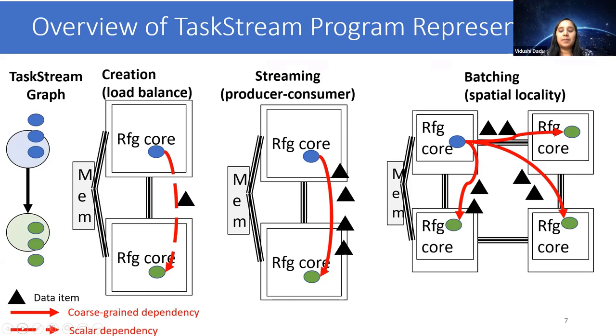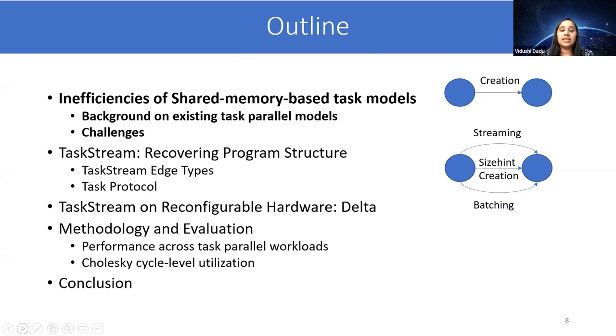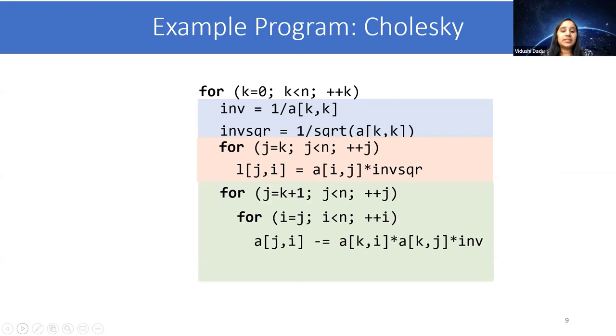In this talk, I will first discuss the inefficiencies of shared memory-based task models, and then describe our solution TaskStream, which is a novel program representation to exploit the lost program structure. Then we discuss how TaskStream is implemented on reconfigurable hardware, and then I will go over the evaluation and conclude. I will use Cholesky as a driving example during this talk to motivate our proposals. Here is the pseudocode of Cholesky where there is an outer loop and several computations are being performed. You do not need to understand the pseudocode as I will go over the computations and dependencies later.